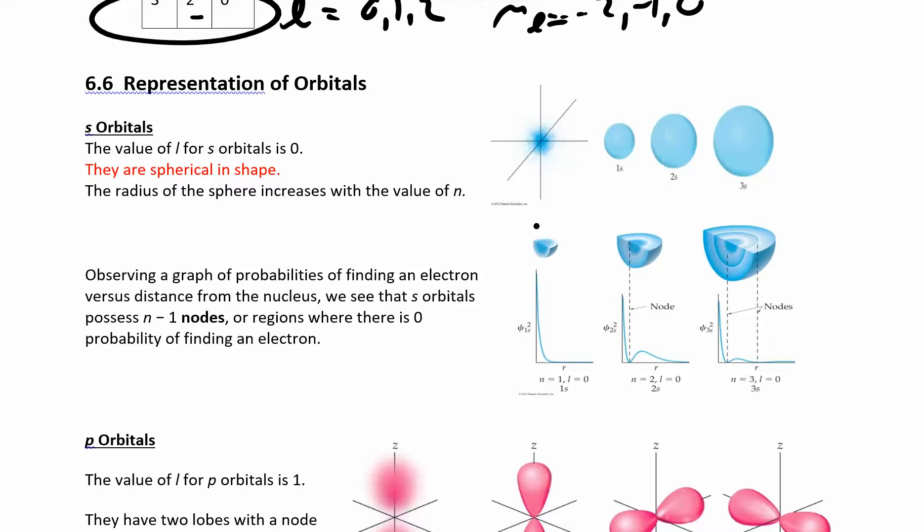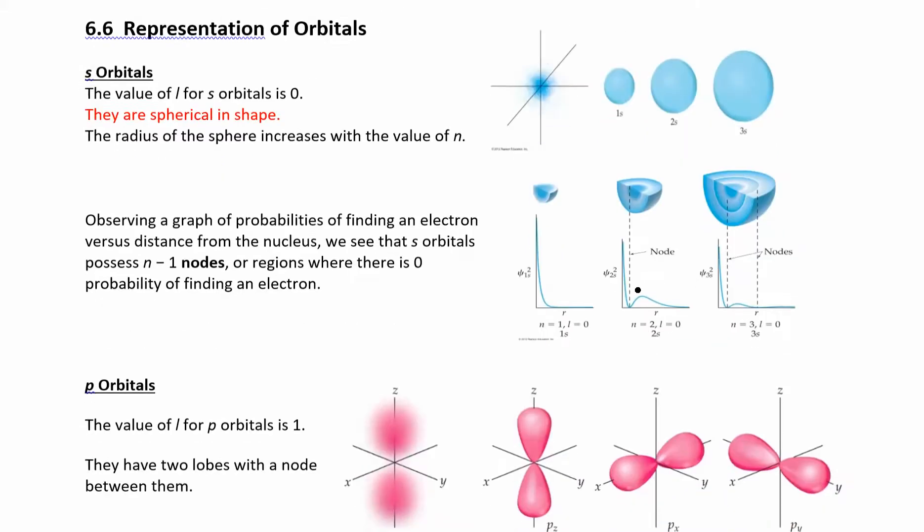It's getting bigger, but it also has these areas that have zero probability. It's called a node. It means zero probability of finding an electron. This kind of looks like a jawbreaker candy, where you can see those inner shells there. It's just a mathematical thing. There's zero probability of finding an electron there. It has to do with wave functions, which we don't have to worry about too much.